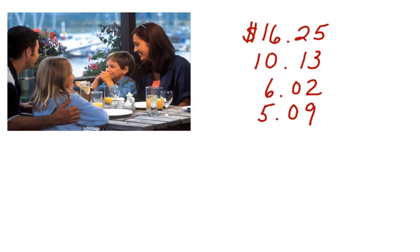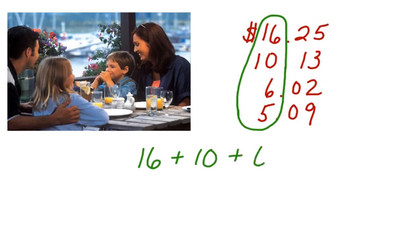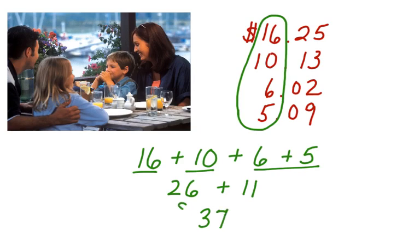Front-end estimation involves adding the front ends of the numbers. In this case, the whole numbers circled here represent the front end. So let's add 16 plus 10 plus 6 plus 5. If I add 16 plus 10 here, I get 26 plus 6 plus 5, which is 11. 26 plus 11 is 37. The family could say that their meal costs about $37.